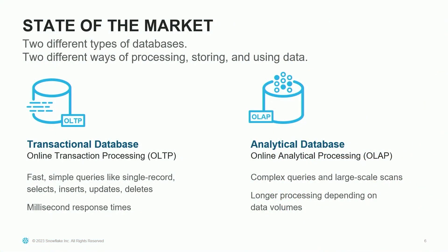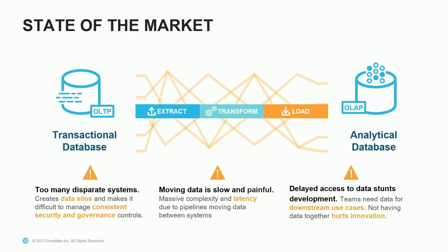For the longest time, transactional and analytical databases have been separate — they store and process data in different ways. Snowflake was born focusing on the OLAP side, leveraging cloud infrastructure to simplify data warehousing workloads. Since then, we've expanded to become a much broader, fully featured data platform. Many customers want to construct a complete view of all their data inside Snowflake, which means bringing together data from many transactional and operational source systems. This introduces challenges: teams must manage multiple systems, redundant data sets make governance difficult, and moving data adds latency.